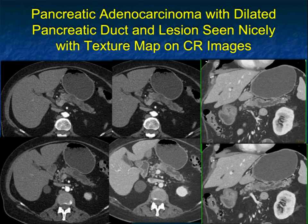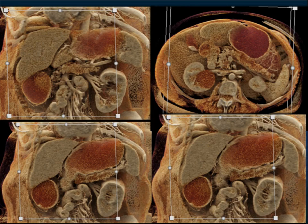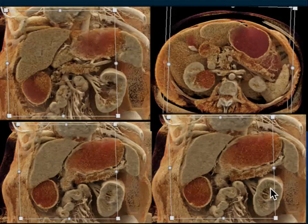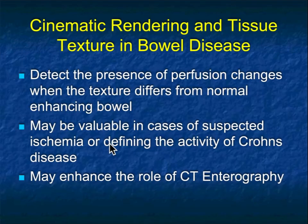Another example — a patient with adenocarcinoma in the pancreas with a dilated pancreatic duct. Texture mapping: you see the dilated pancreatic duct, particularly on the coronal views, you see the transition, and then look how nicely you can see the tumor on the cinematic rendering. The dilated duct, but the tumor which was poorly visualized on the axials — you kind of know where the tumor has to be, but it's hard to see. It's better seen on the cinematic where you can accentuate the textural map. This idea about cinematic with vascular mapping is nicely shown in this example.